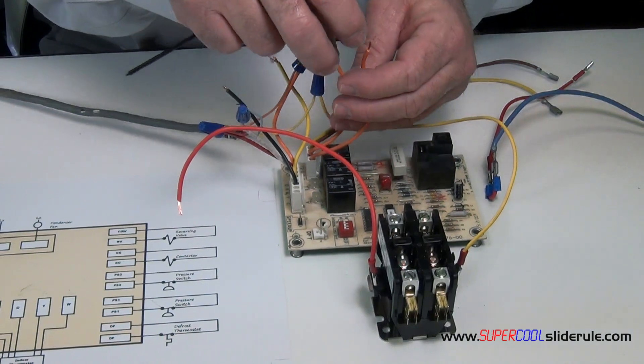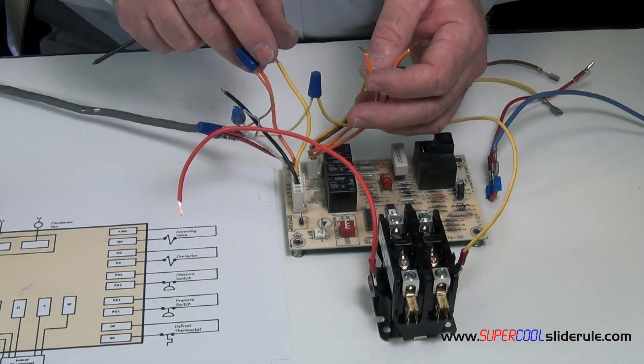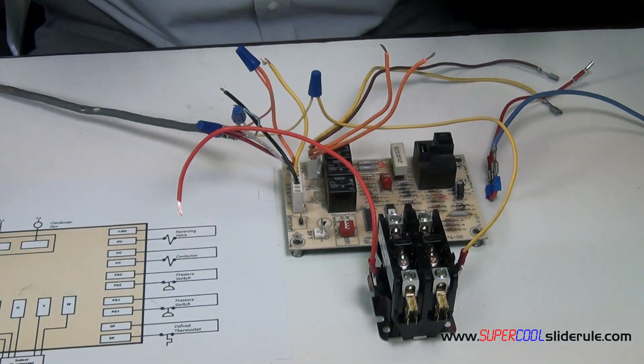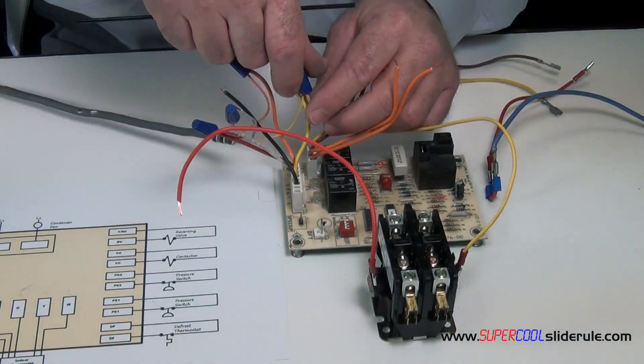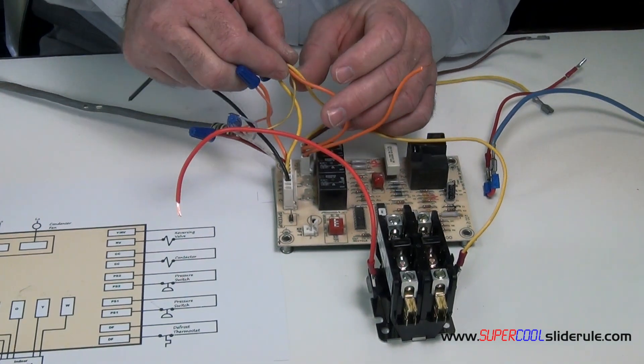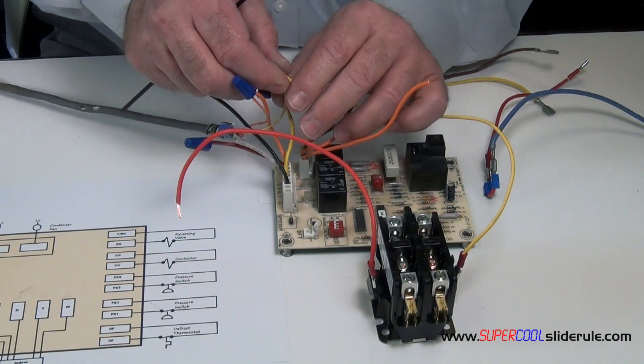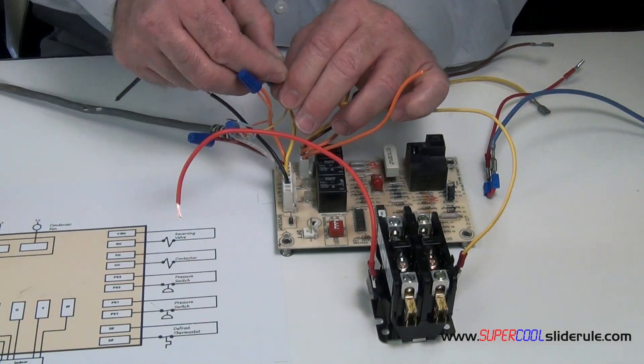To the reversing valve it doesn't matter which goes where. Easiest way to do this is if all we're doing here is bypassing for air conditioning, just hook it to air conditioner, that's the easiest thing. So we've got the contactor for the cooling and the reversing valve all jumpered together.